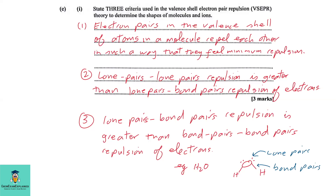Question 1e part 1: State three criteria used in the Valence Shell Electron Pair Repulsion (VSEPR) theory to determine the shapes of molecules and ions. One: electron pairs in the valence shell repel each other to achieve minimum repulsion. Two: lone pair to lone pair repulsion is greater than lone pair to bond pair repulsion. Three: lone pair to bond pair repulsion is greater than bond pair to bond pair repulsion.